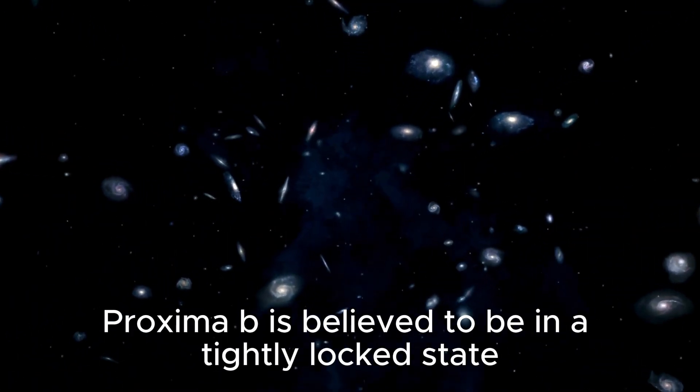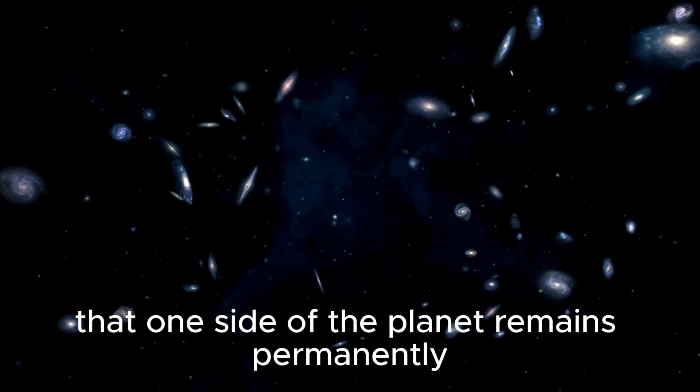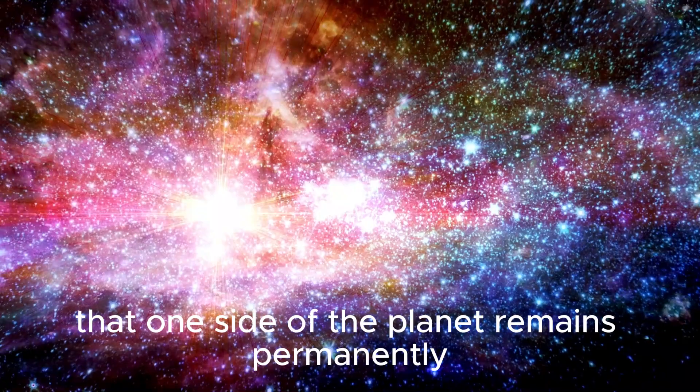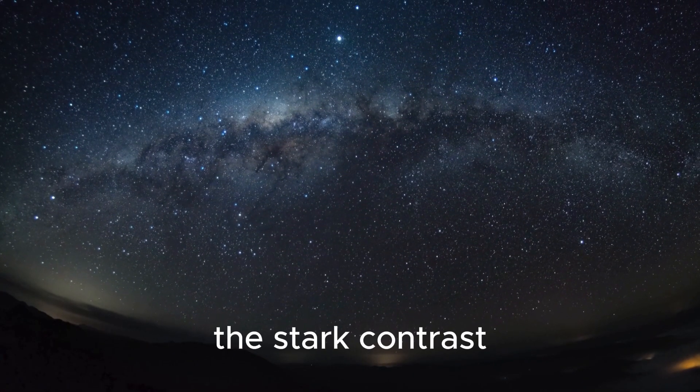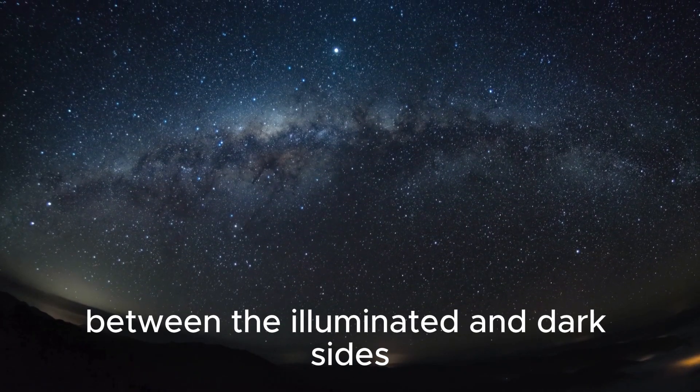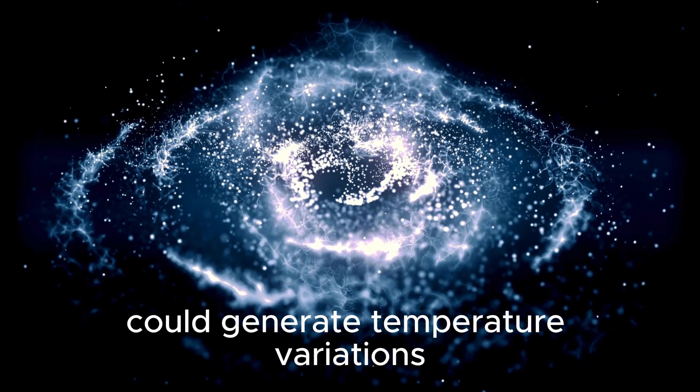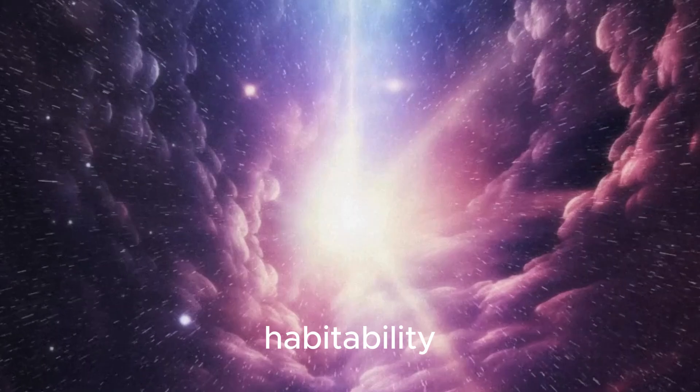Proxima b is believed to be in a tidally locked state, meaning that one side of the planet remains permanently in darkness, while the other side is permanently illuminated by the star. The stark contrast between the illuminated and dark sides could generate temperature variations and dynamics that could affect the planet's habitability.